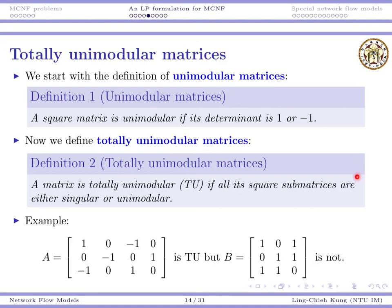So, according to this definition, given any matrix, you are able to check whether it's totally unimodular or not. So, with totally unimodular matrices, we're going to give you a property in the next video. Thank you.